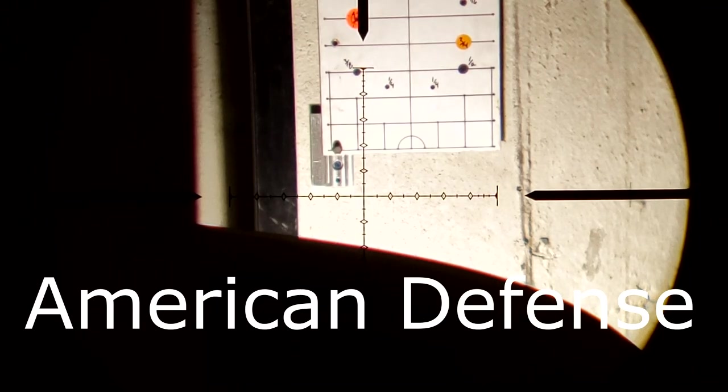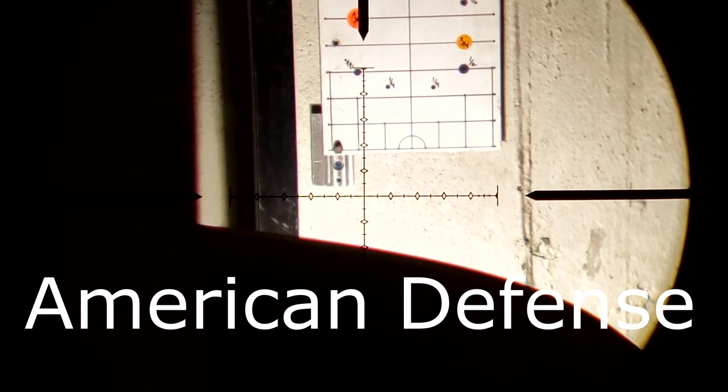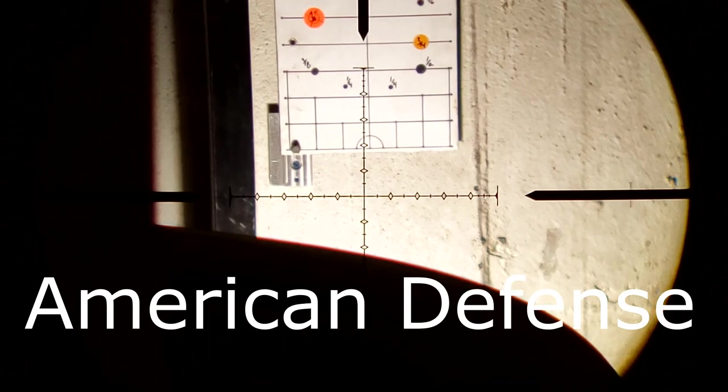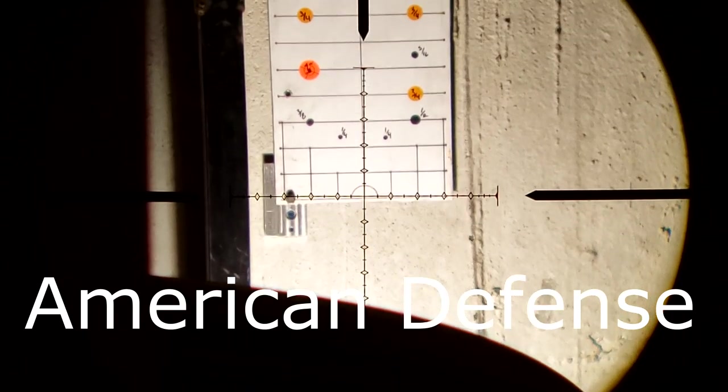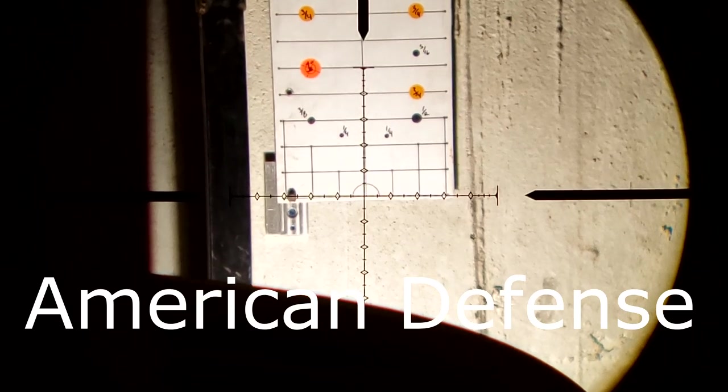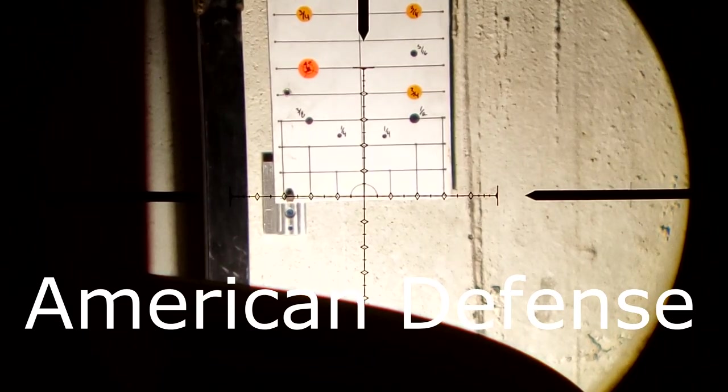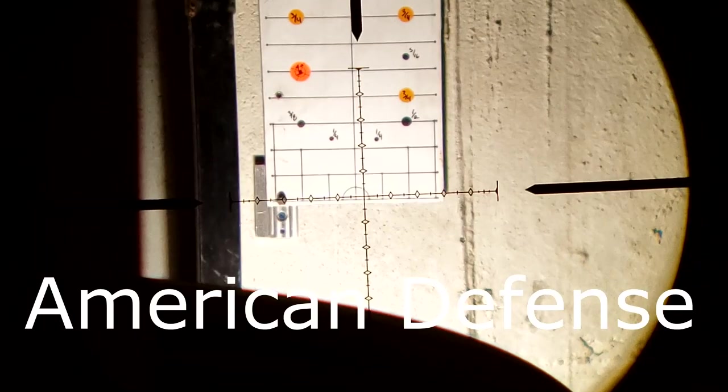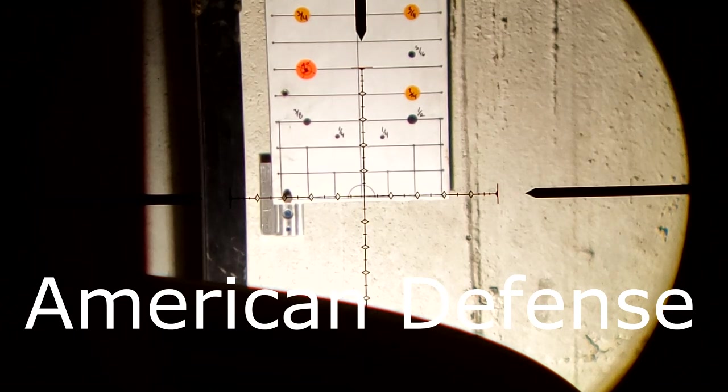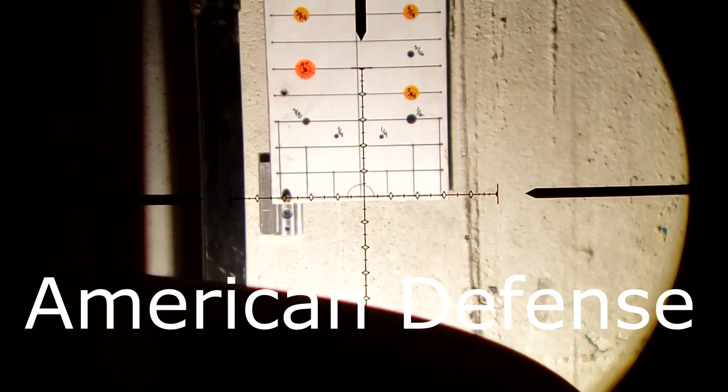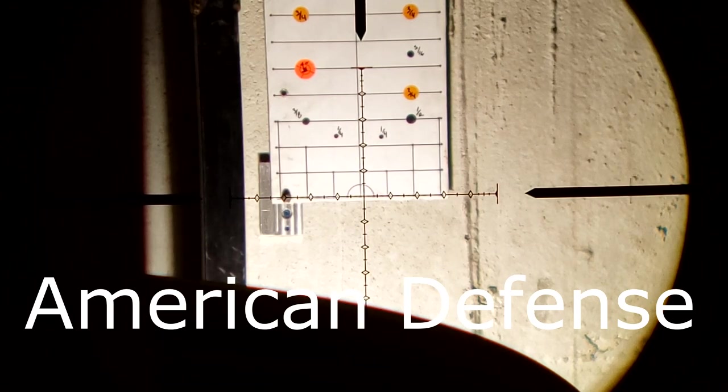All right, this is going to be the last mount in this video. This is my American Defense Recon, again, with the SWFA 16x. Now, I don't have anything tight except for the mount on the rail. And we're going to be doing the exact same thing we've done with the other two mounts. I did not do it with the Spur because I already had everything really nicely torqued down. But maybe if I get enough requests to do so, I will redo it. So, right off the bat, we're pretty close.